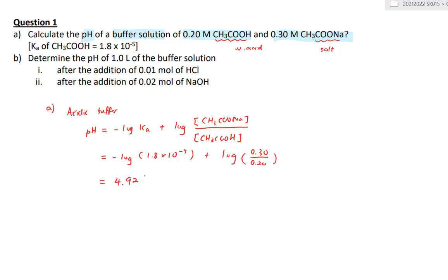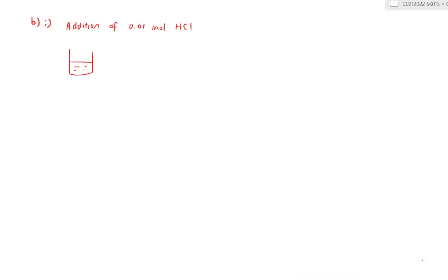So this is the acidic buffer solution before anything is added. In part B, we determine the pH of 1 liter of the buffer solution after the addition of 0.01 mol of HCl — a strong acid added in a very small amount. And then for part B2, after the addition of 0.02 mol of NaOH, a small amount of strong base. For B1, we are adding 0.01 mol HCl, which is an acid.